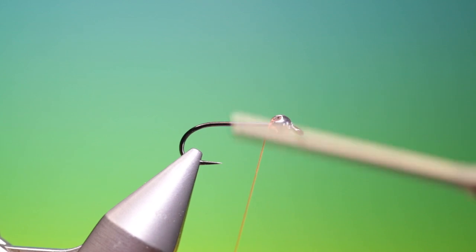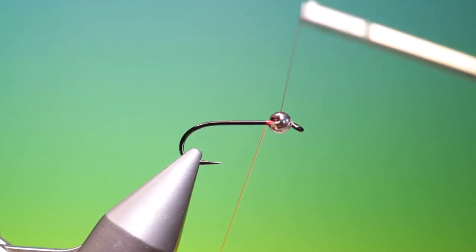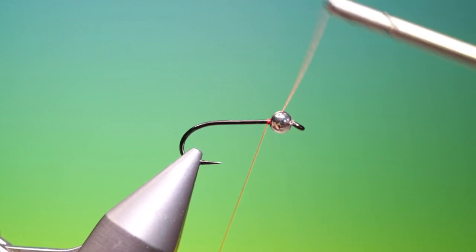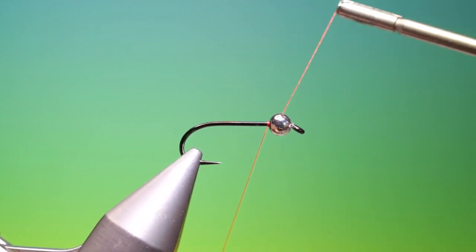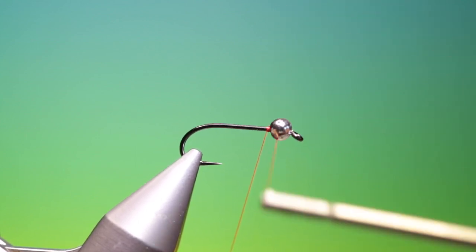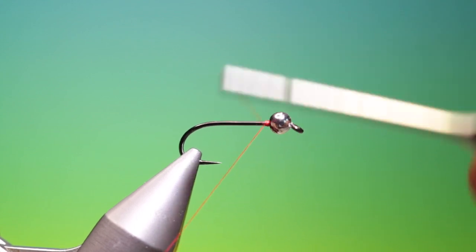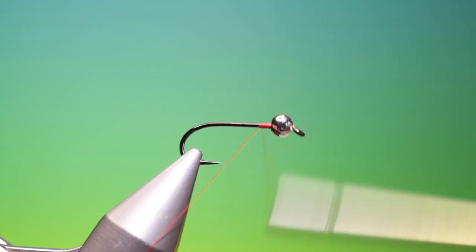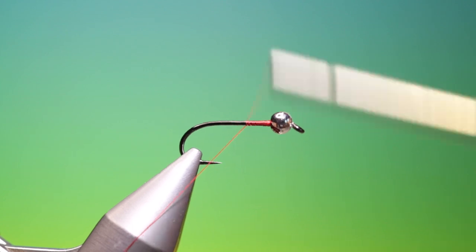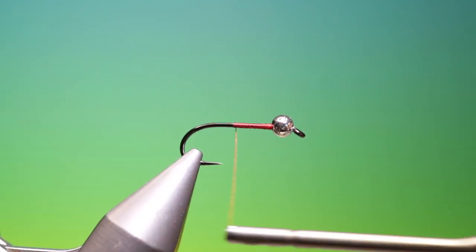It is a good pattern. When you're doing these slotted beads, if you put your tying thread in the slot and just wind around, it'll eventually tighten up and lock off. Then we'll just go back down the hook shank.